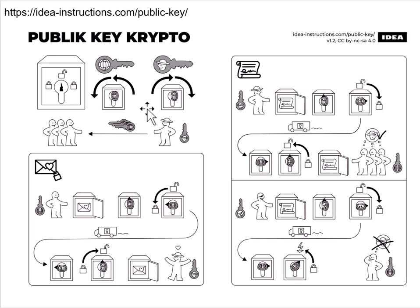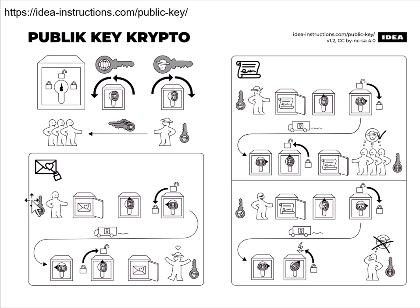This lets us do two things. First, it lets us keep a message safe. Someone puts a message inside a safe and locks it up, it's then transmitted to the receiver who uses their key to unlock. As the person receiving a message, I send you a public key. You use that public key to lock up your message, and then the only one that can unlock it is me with the private key. Because the keys are not symmetrical, you cannot use a public key to unlock a safe locked with a public key.